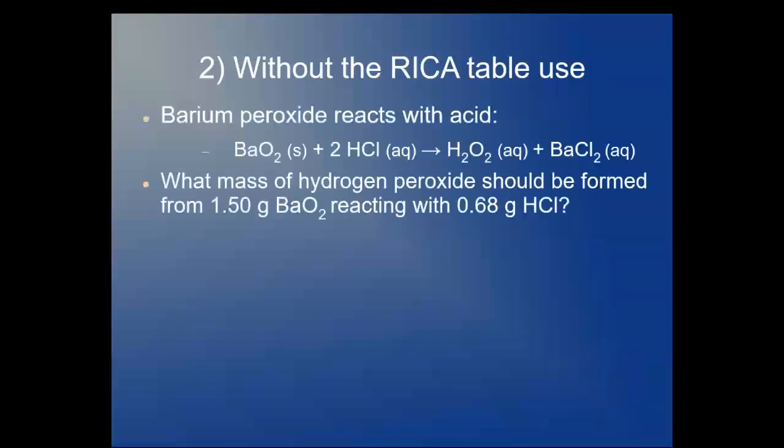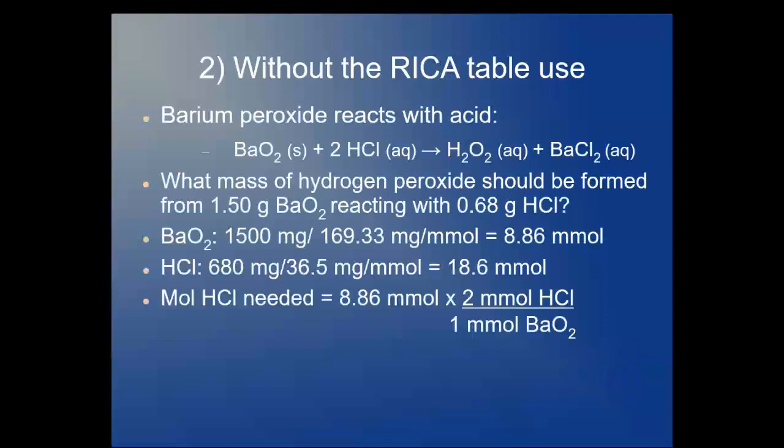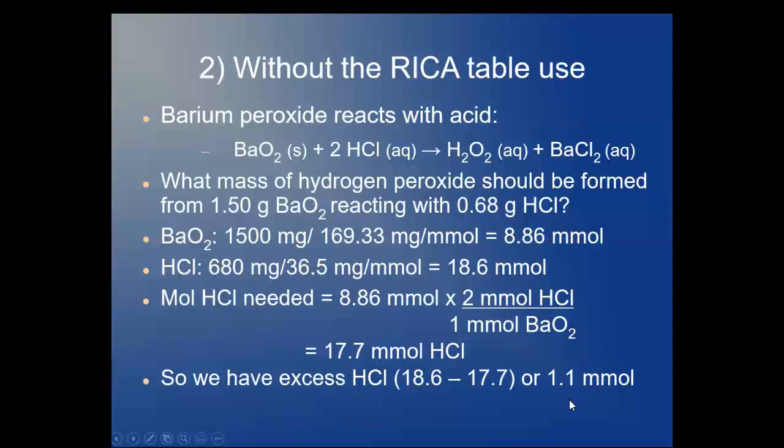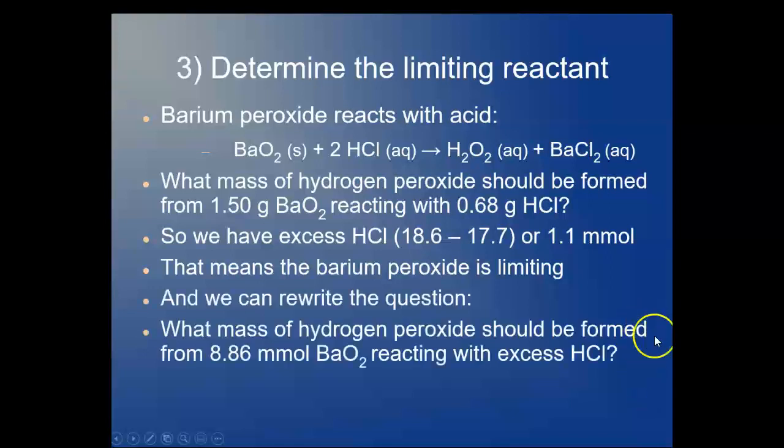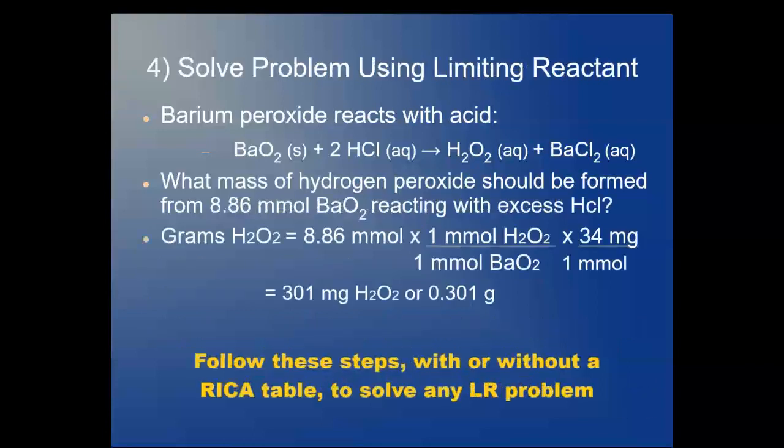Without the RECA table, we would do the same thing. We don't have the visual that we need. We figure out how many moles of hydrochloric acid are needed, two times the 8.86 on the barium peroxide, 17.7 millimoles, and having also known this, we have the 1.1 millimole excess in hydrochloric acid. So the barium peroxide is limiting. We rewrite the equation: what mass of hydrogen peroxide should be formed from 8.86 millimoles of barium peroxide reacting with excess hydrochloric acid. Again, you can see that the RECA table is extremely useful because it'll tell us how much excess hydrochloric acid we've got.